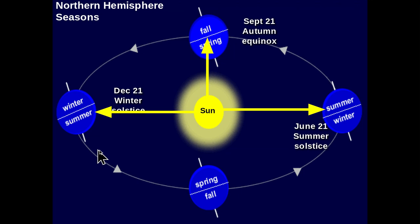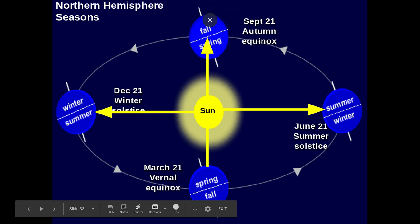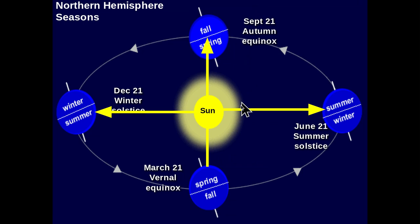Going from December to January, February, and March — on March 21st the sun rays return back to the equator. This becomes the vernal or spring equinox on March 21st. As the Earth rotates, you see the 23.5 degree angle dictating the position of where the sunlight hits the Earth.